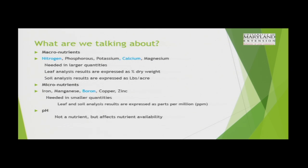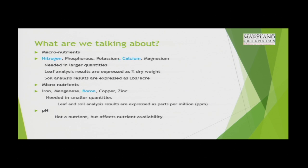And then pH. Now, pH is not a nutrient. pH stands for potential hydrogen — it's a measurement of the acidity in the soil. So it's not a nutrient, but it is extremely important to how available the nutrients are in the soil to the plant. We're going to spend a little time talking about pH.